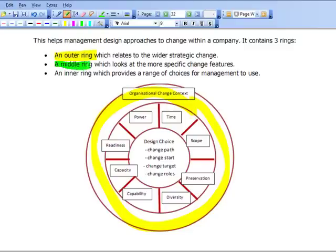We then look at a middle ring which looks at more specific areas. For example, it will look at time - how much time do we have? What's the scope? Is it a major change or a minor change? Preservation - what do we want to keep? Diversity - what diversity is involved? Capability - what skills and capability do we have? Capacity - what is the capacity for this change? Readiness - how ready are we for this change? And the power - where does the power actually lie?